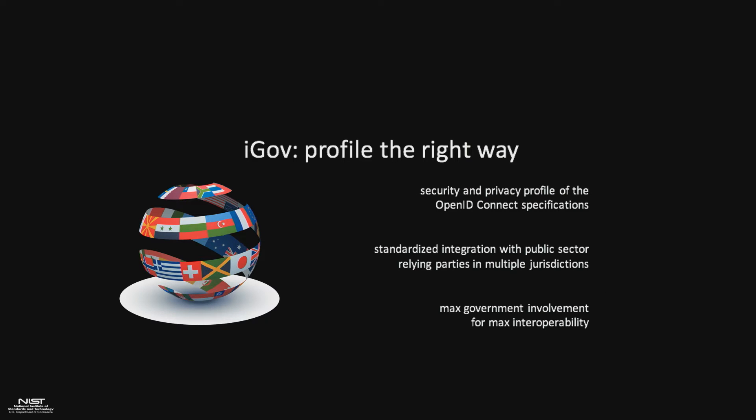I mentioned earlier our international goals. In the past with government identity, we went into the bowels of GSA, came up with profiles of identity standards because we thought we were the smartest. Then we deployed it and not a single private sector company could implement it, nor could an agency, nor could any of our partners. And what did we do? We forced them to. And now in the spirit of interoperability, we have none.